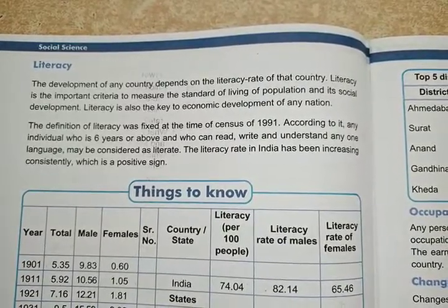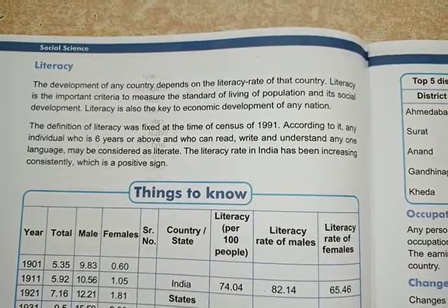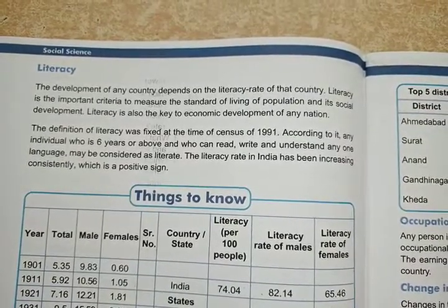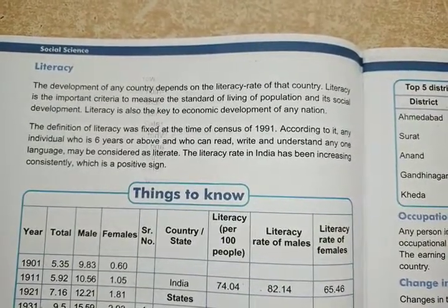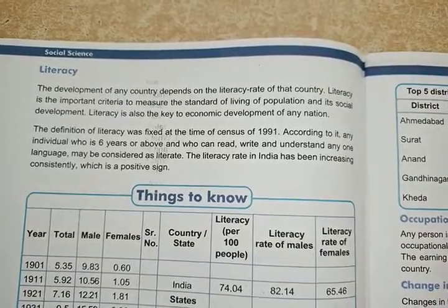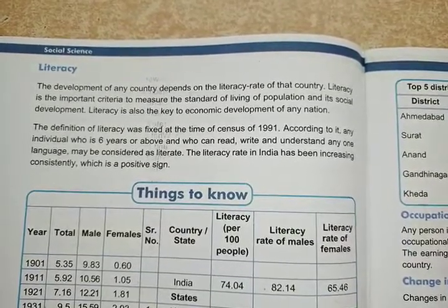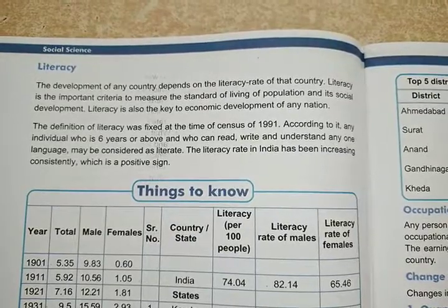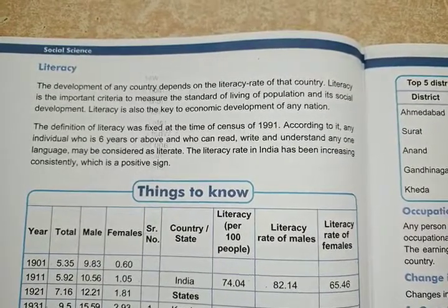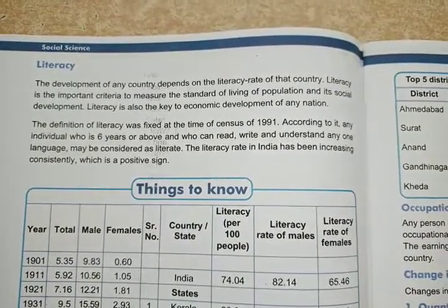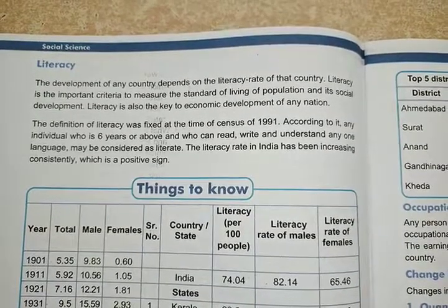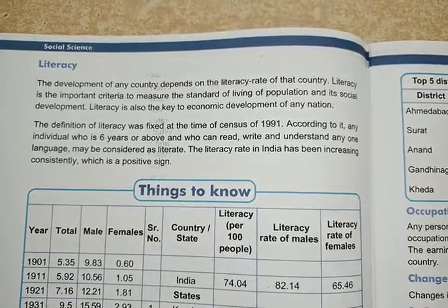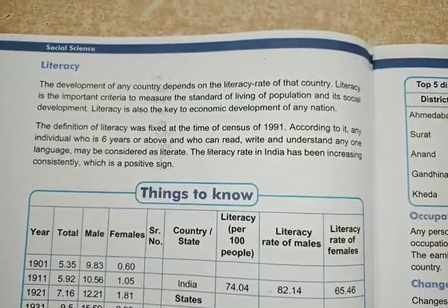The definition of literacy was fixed at the time of the census of 1991. According to it, any individual who is six years or above and who can read, write, and understand any one language is considered as literate. The literacy rate in India has been increasing consistently, which is a positive sign, as literacy is an important criteria to measure the living standards of the people.